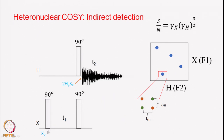Here also it is similar — you start with X and end up with 2HyXz. Now you detect the proton, because it is antiphase proton magnetization. During the T2 period you will have the proton evolution going on and coupling evolution as well. In the 2D spectrum, you have the proton along the F2 axis and the X nucleus along the F1 axis — therefore we call it indirect detection of the X nucleus. The fine structure will be the same as in the previous case: plus-minus-minus-plus character in the individual cross peaks, with the coupling constant as the separation between the two peaks.